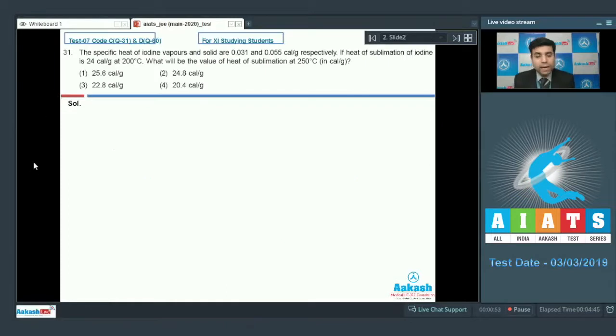So this is the question we have which says the specific heat of iodine vapors and solid are 0.031 and 0.055 calorie per gram respectively. If heat of sublimation of iodine is 24 calorie per gram at 200 degree Celsius, what will be the value of heat of sublimation at 250 degree Celsius in calorie per gram.